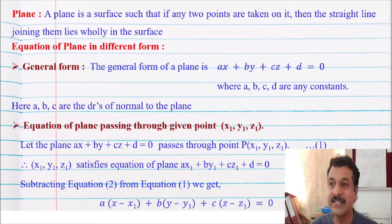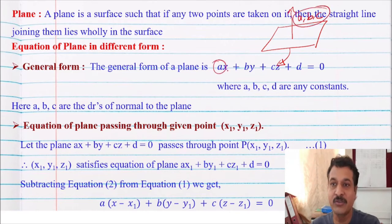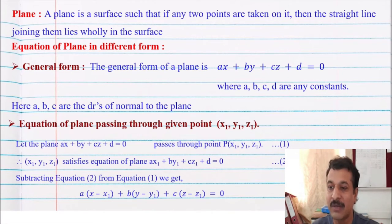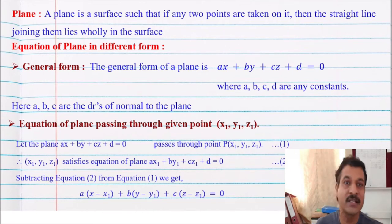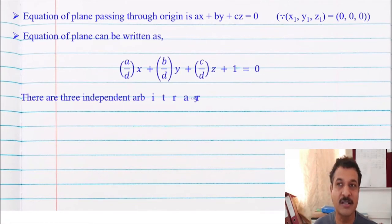Here A, B, C are the direction ratios of the normal to the plane. It means that if any plane is given with that equation, then a normal — that is, a perpendicular line — has direction ratios A, B, C, which are the coefficients of x, y, and z. Also remember the equation of a plane passing through a given point (x1, y1, z1) is A(x minus x1) plus B(y minus y1) plus C(z minus z1) equal to zero. It is very clear that the equation of a plane passing through the origin means the constant term is absent.